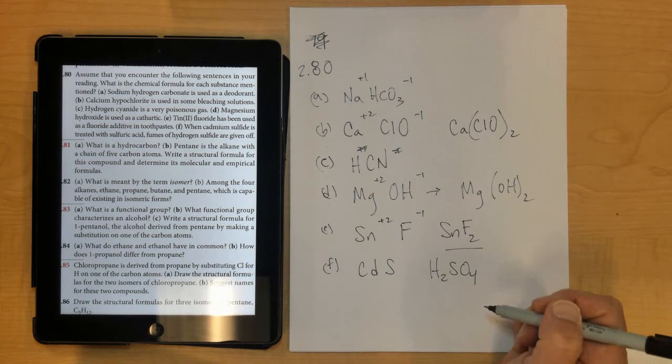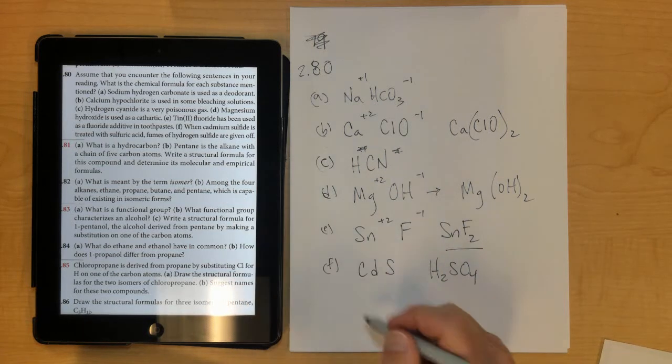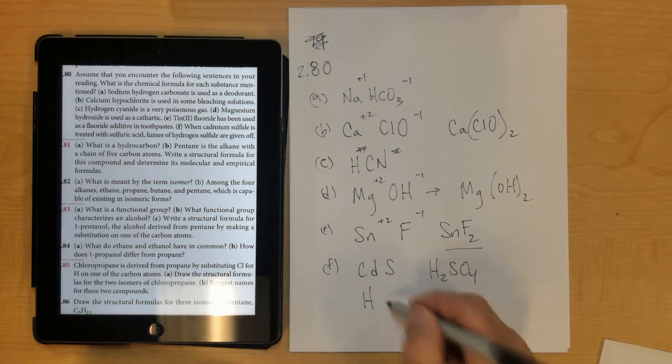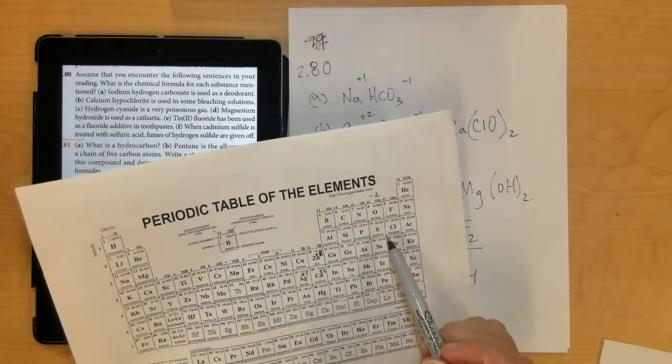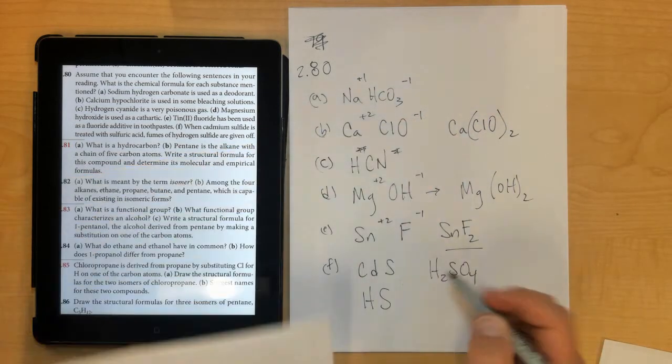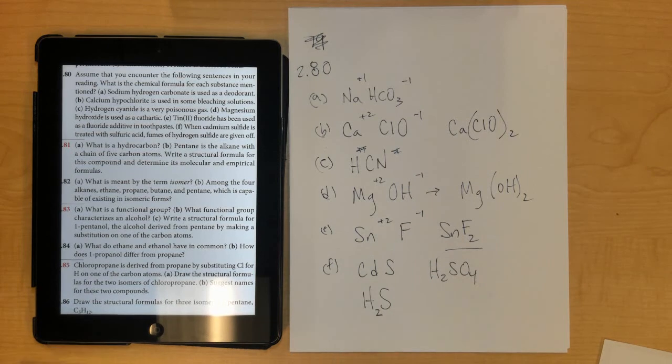and then hydrogen sulfide fumes are given off, so hydrogen sulfide would be hydrogen with sulfur. Hydrogen's in group 1, so it's plus 1. Sulfur's in the oxygen group, so it's minus 2, so make sure that you have H2S. That's number 80.